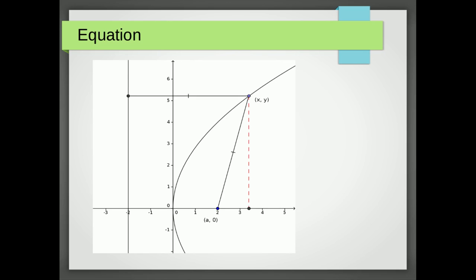Let's derive the equation of our parabola. The focus is at (a, 0) and the directrix is at x equals minus a. We form a right-angle triangle where the red dotted line has a length of y and the bottom part of the triangle has a length of x minus a.